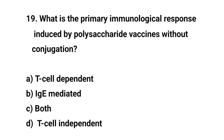Question number 19. What is the primary immunological response induced by polysaccharide vaccines without conjugation? The right answer is D: T-cell independent.